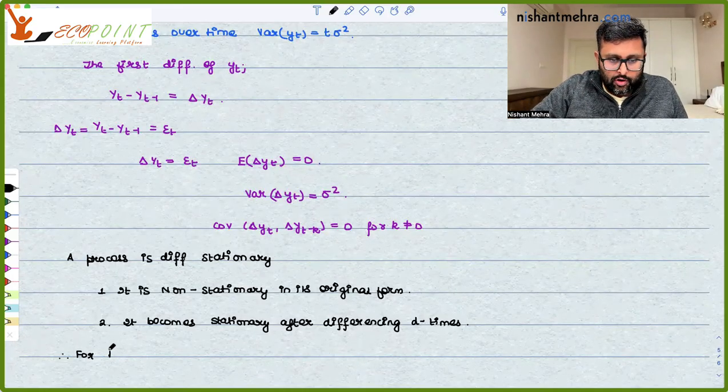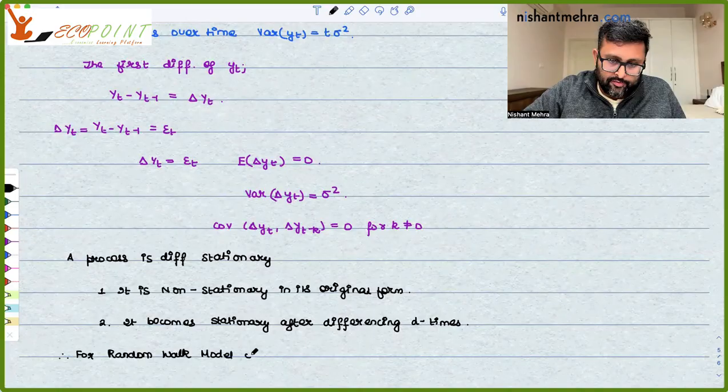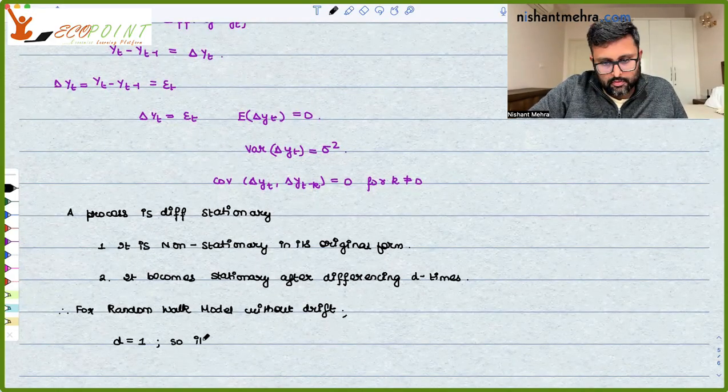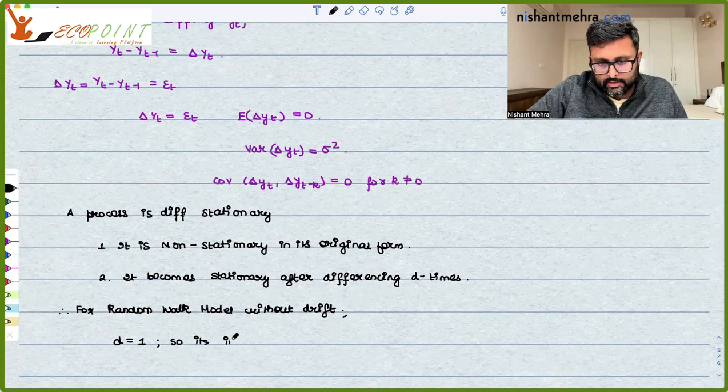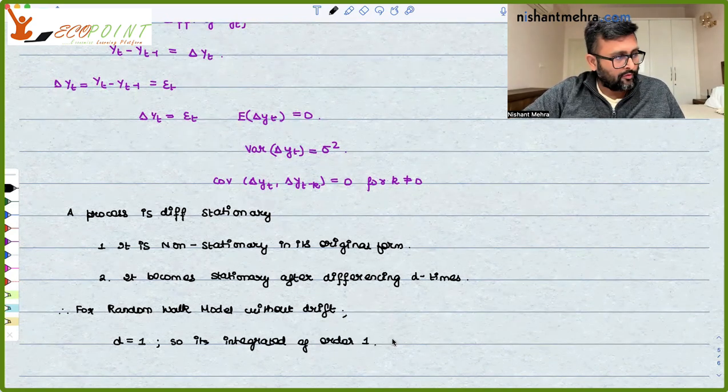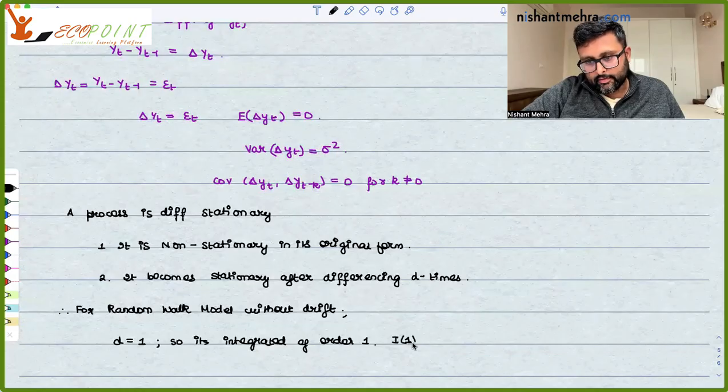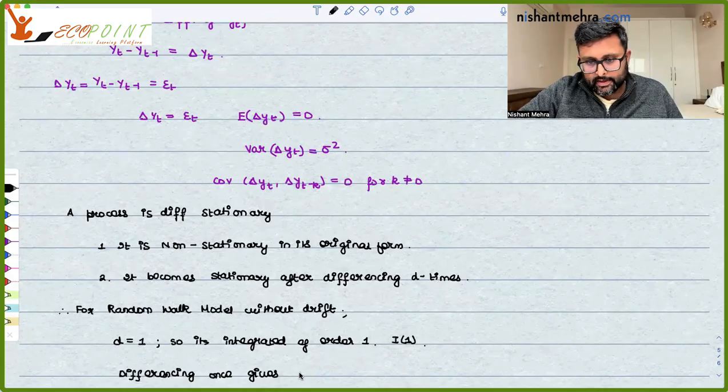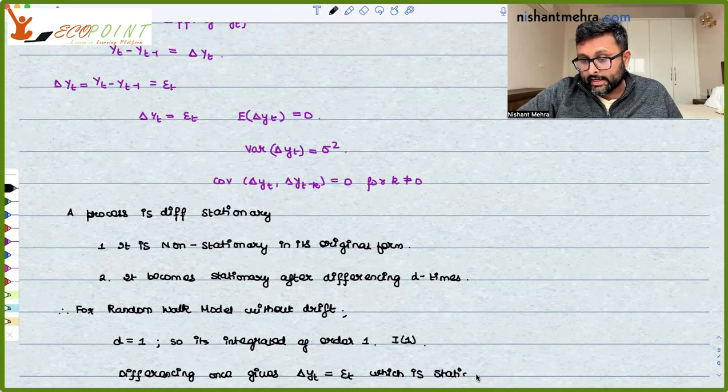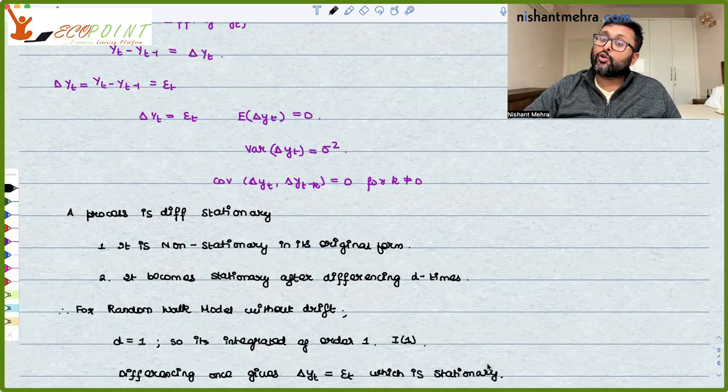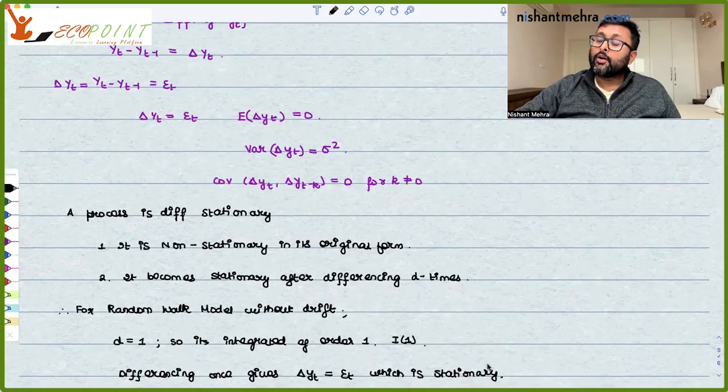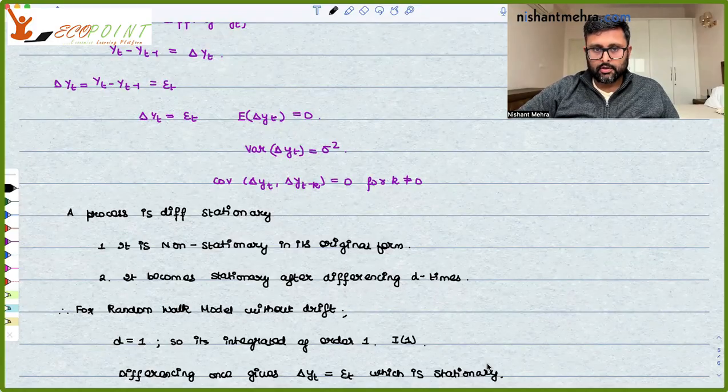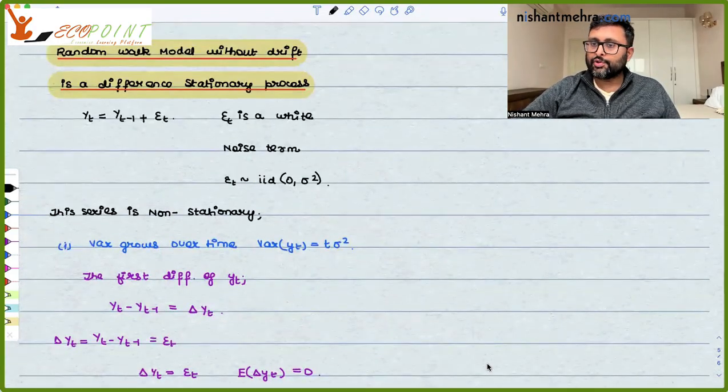So for random walk model without drift, d is equal to 1. So it's integrated order 1, and that is written as I(1). Differencing once gives delta yt, which is epsilon t dependent, and epsilon t has constant variance, zero mean and no autocorrelation. So it is stationary. I hope it was useful to you. Thank you.